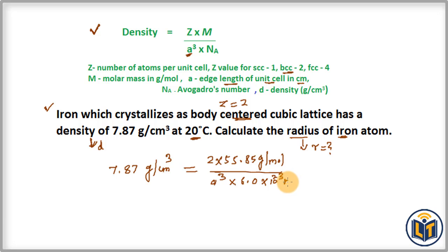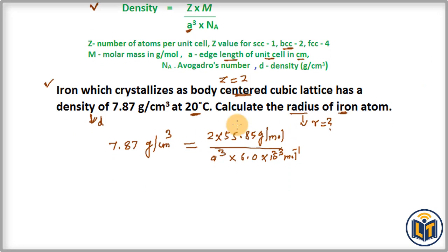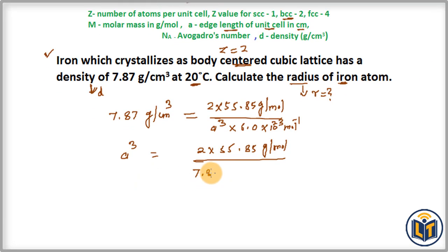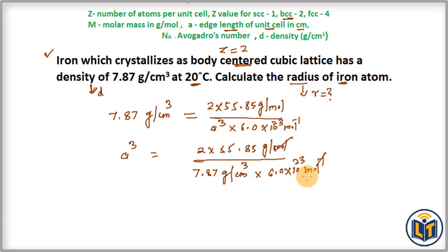This is multiplied by Avogadro's number, which is the constant 6.0 times 10 to the power 23 per mole. We then do cross multiplication, transferring a-cubed to the left side and the density value to the right side. Units of mole per mole cancel out, and gram per gram cancels out.